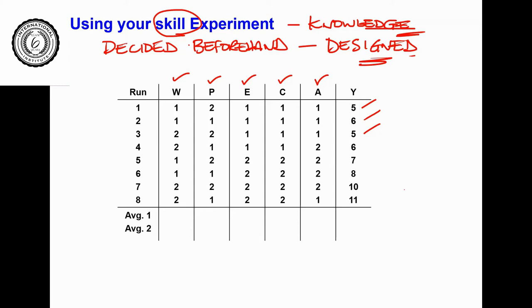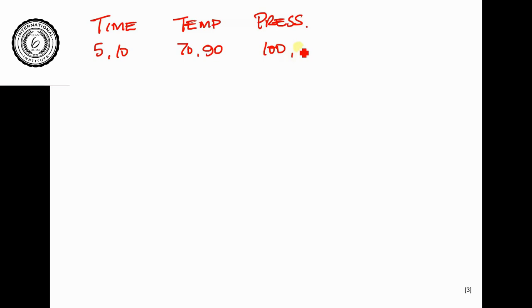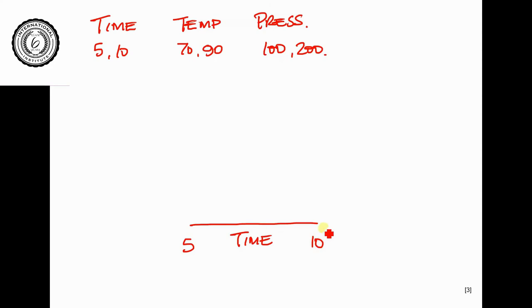Let me show you in a simple diagram. We're going to think about three variables: time, temperature, and pressure. Time is going to be 5 to 10 seconds, temperature 70 to 90 degrees, and pressure 100 to 200. The pattern to be tested has time tested at the low and at the high only — so we test at 5 and 10.